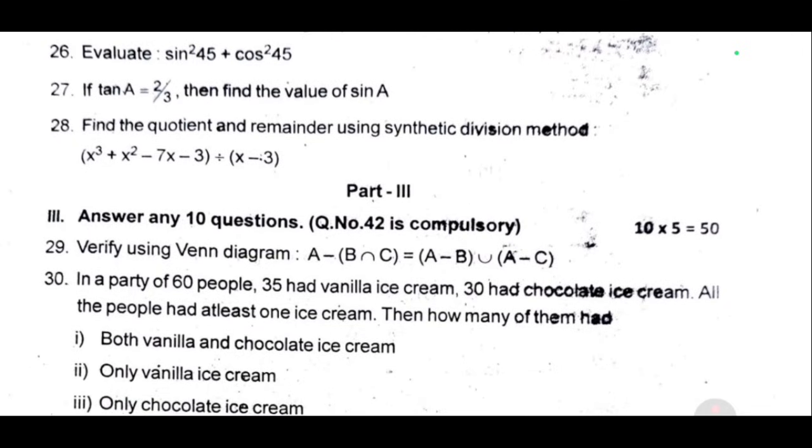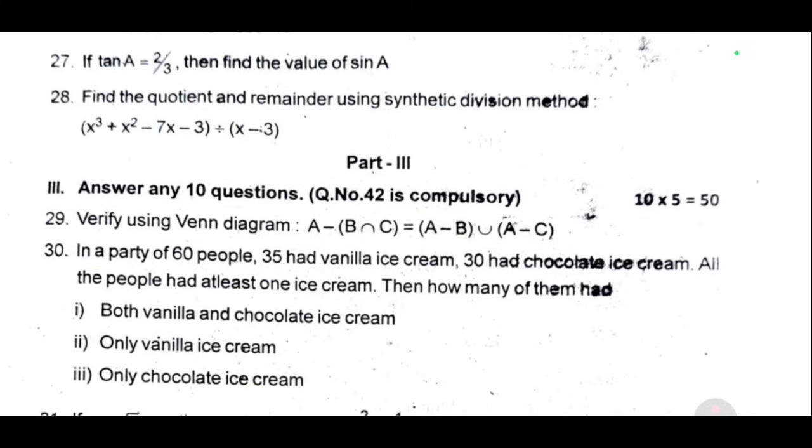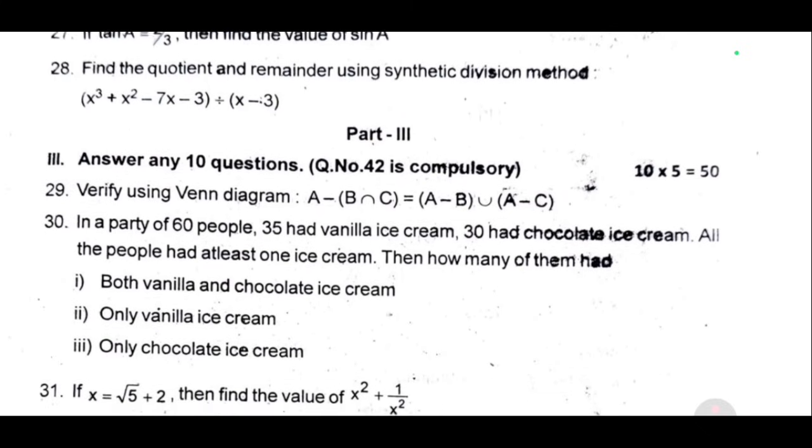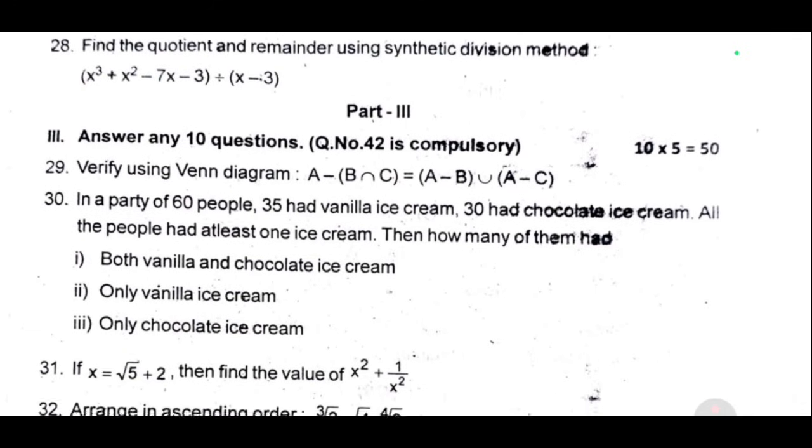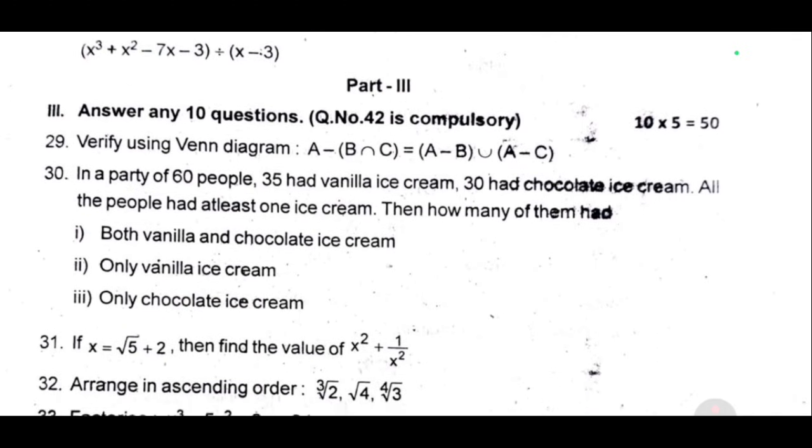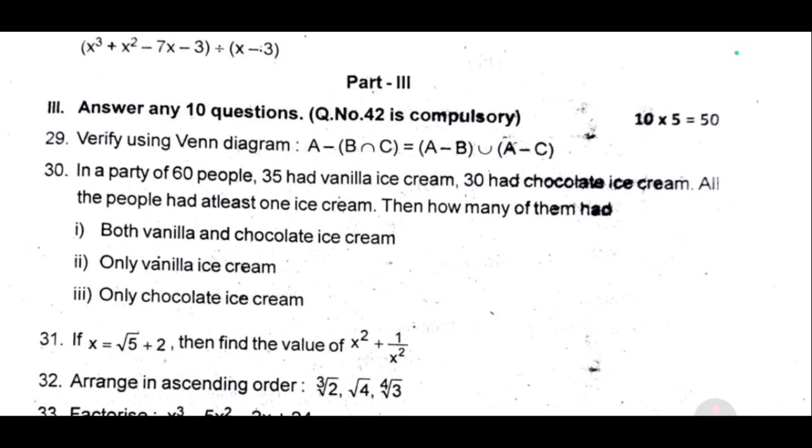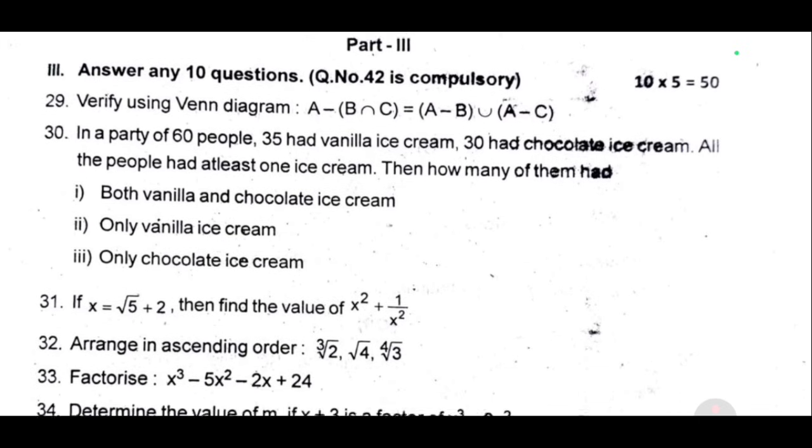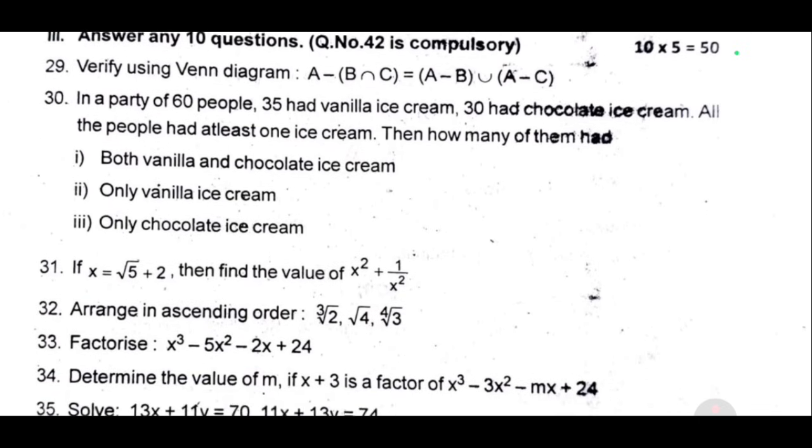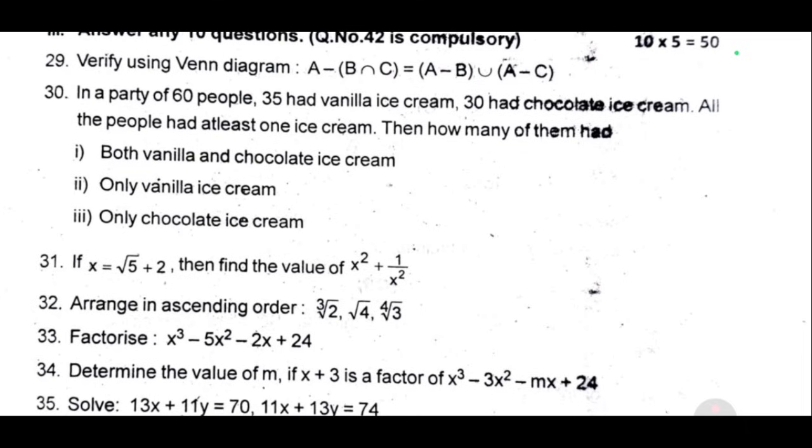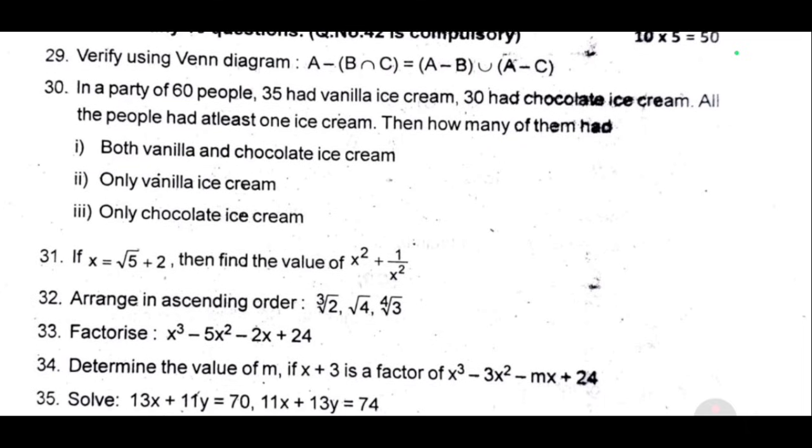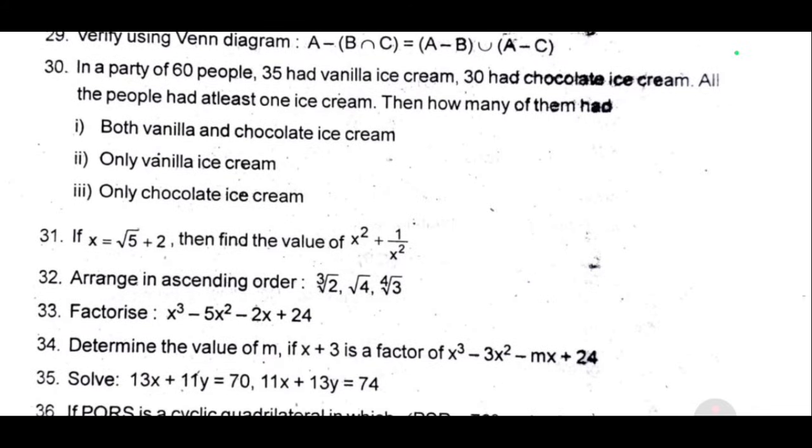30, in a party of 60 people, 35 had vanilla ice cream, 30 had chocolate ice cream. All the people had at least one ice cream. Then how many of them had both vanilla and chocolate ice cream, only vanilla ice cream, or only chocolate ice cream? 31, if x equal to root 5 plus 2, then find the value of x square plus 1 by x square. Most important question. 32, arrange in ascending order 3 root 2, 4 root 4, 4 root 3. 33, factorize x cube minus 5 x square minus 2 x plus 24. 34, determine the value of m if x plus 3 is a factor of x cube minus 3 x square minus m x plus 24.